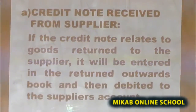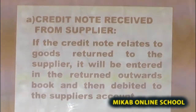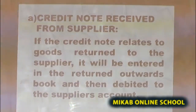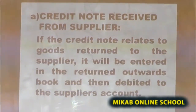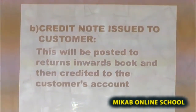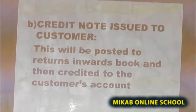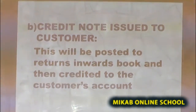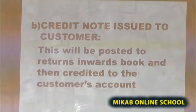We can see credit notes from two perspectives. The first one is credit notes received from a supplier. If the credit note relates to goods returned to the supplier, it will be entered in the returns outward book, and thereafter it is debited to the supplier's account. The second perspective is credit notes being issued to a customer. This will be posted to the returns inward book and then credited to the customer's account.